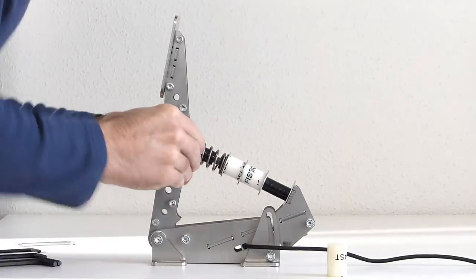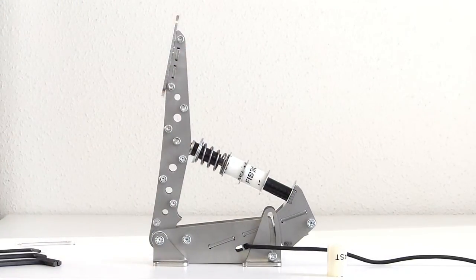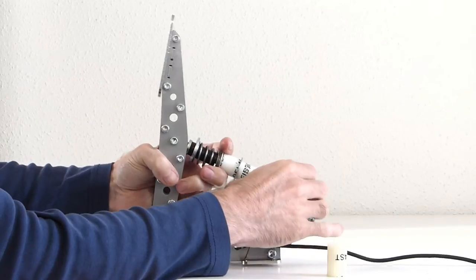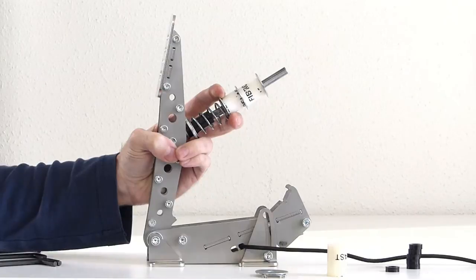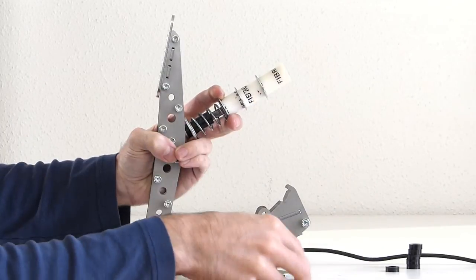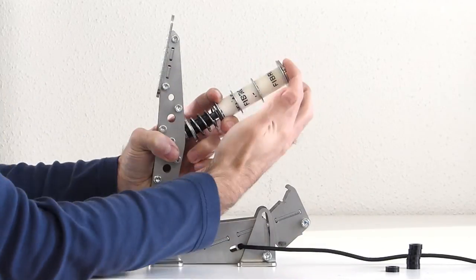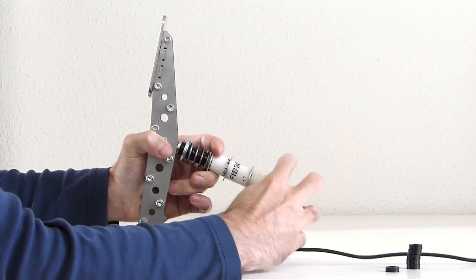So compress with your fingers the spring. And then pull it out like that. Take the parts off. Replace it. Always a washer between the rubbers. And then you click it into place again.